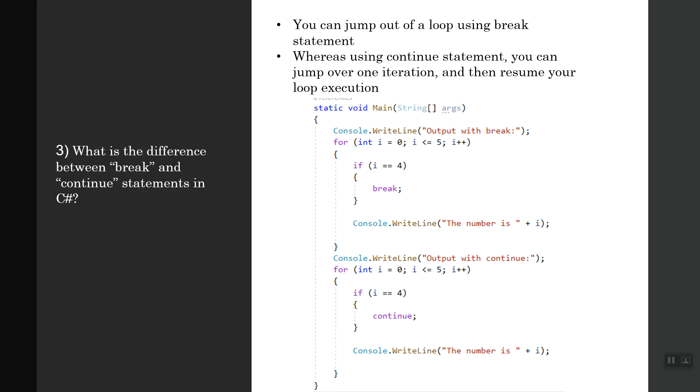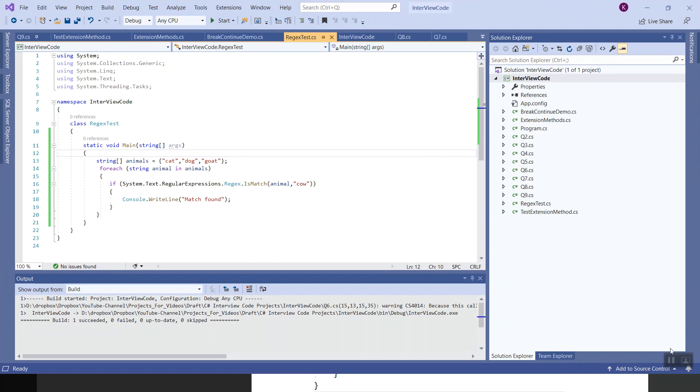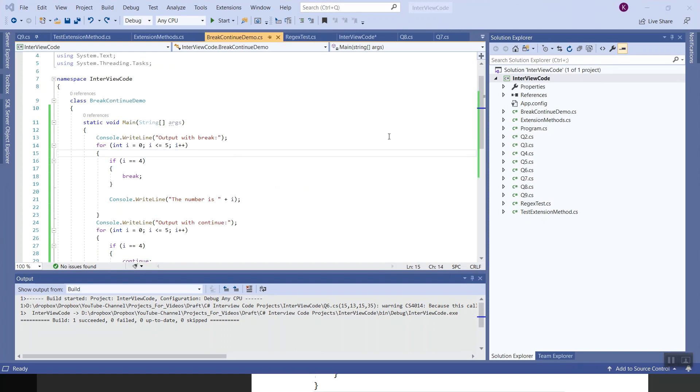Let's run this code on Visual Studio. Let's flip over to Visual Studio. In the static void main, the driver method, I am writing the first statement as output with break. And in the second block of code, output with continue. Let's see what is expected and then we will analyze.